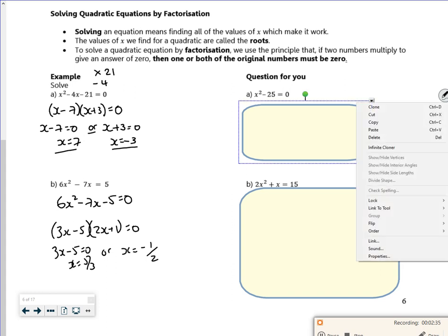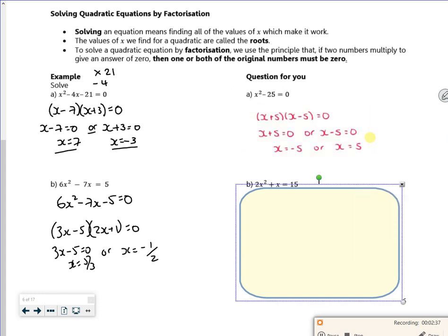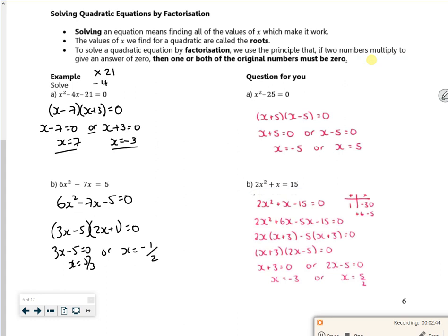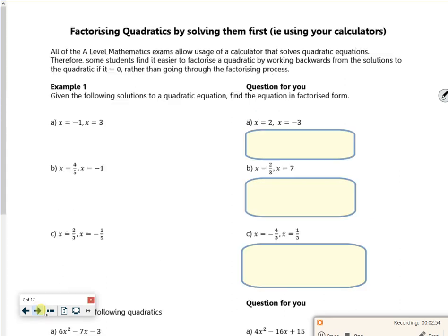Got a difference of two squares there, look, a bit sneaky. And we've got another one here. So you see what they've done? They've split that plus x up into a plus 6x minus 5x. Whatever works for you, please get that answer. And to be fair, we're going to use our calculator now.